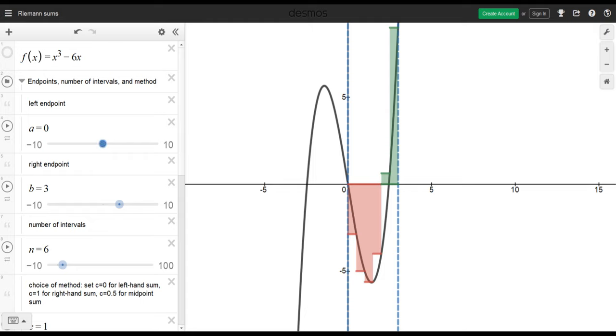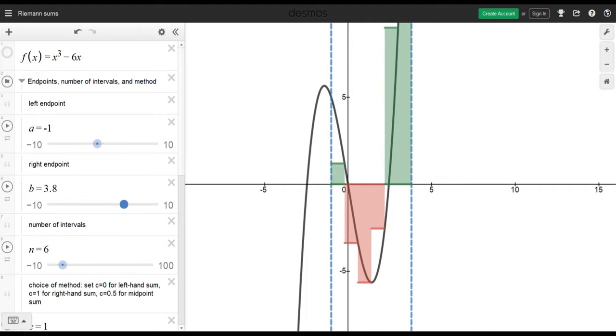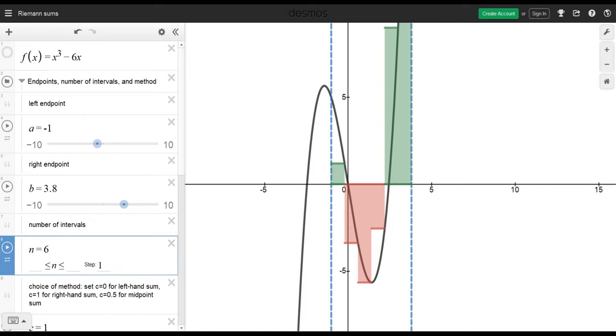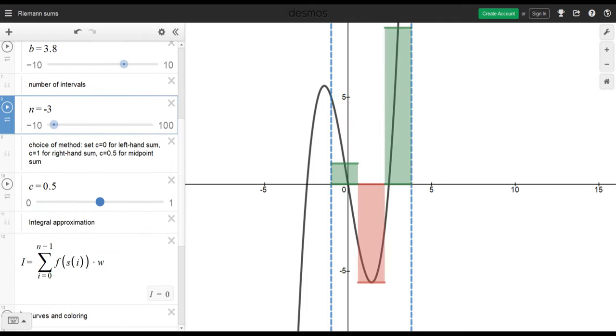I want to show you Desmos first because I like it—it shows you not just the answer, but geometrically what's going on. This thing is manipulative. You can type in the function, change it if you want. You can change the left endpoint, and that affects things. I'm going to put it back to 0. You can switch the right endpoint as well, and it changes in real time. You can also change the number of rectangles here.